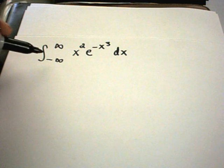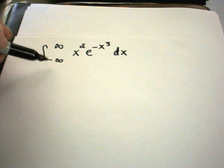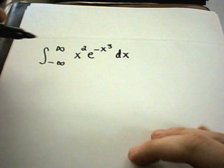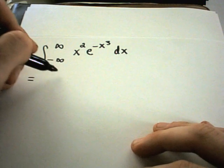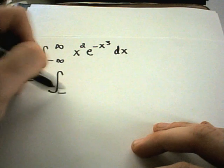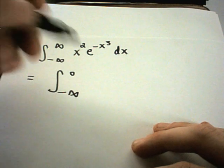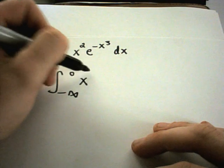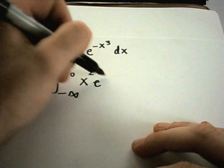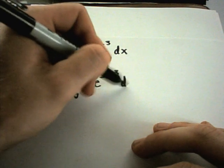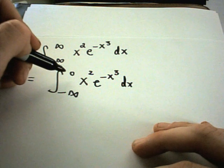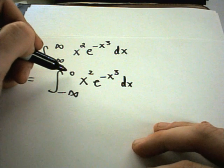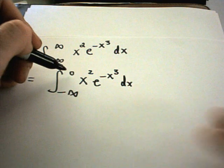So in this improper integral, notice we have from negative infinity to positive infinity. What you're gonna have to do on these problems is bust it up. I'm gonna pick zero - you can break it up at any arbitrary point. x squared e to the negative x cubed. Zero is a good place to break things up because when you use it in your limits of integration, evaluating things at zero is pretty simple.